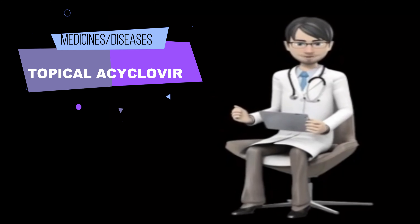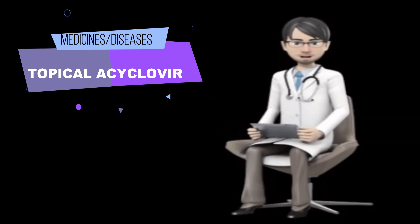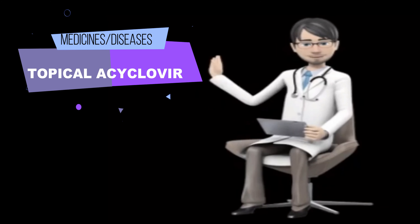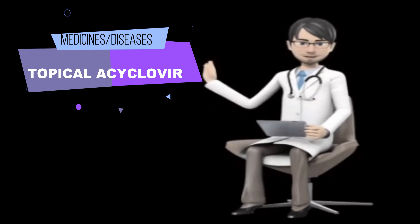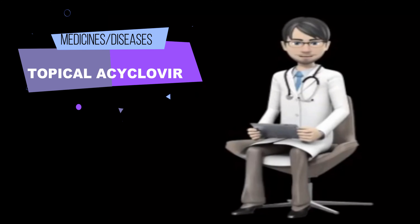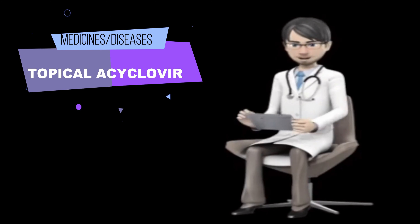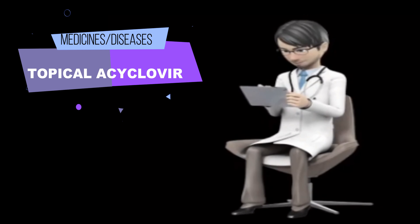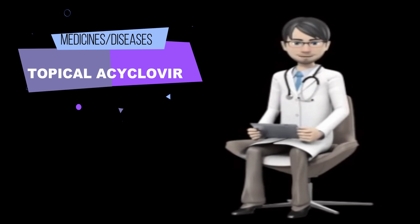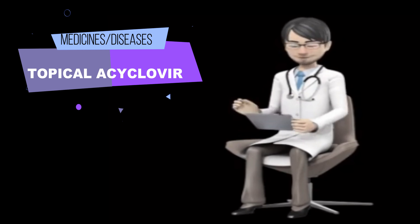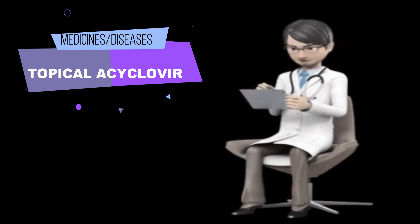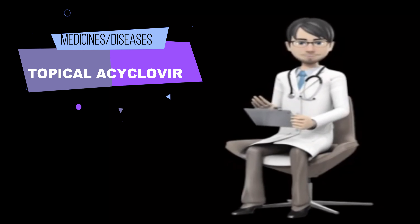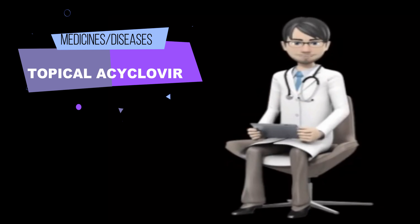Acyclovir cream is used to treat cold sores, fever blisters, and blisters caused by the herpes simplex virus on the face or lips. Acyclovir ointment is used to treat first outbreaks of genital herpes, a herpes virus infection that causes sores to form around the genitals and rectum from time to time, and to treat certain types of sores caused by the herpes simplex virus in people with weak immune systems.